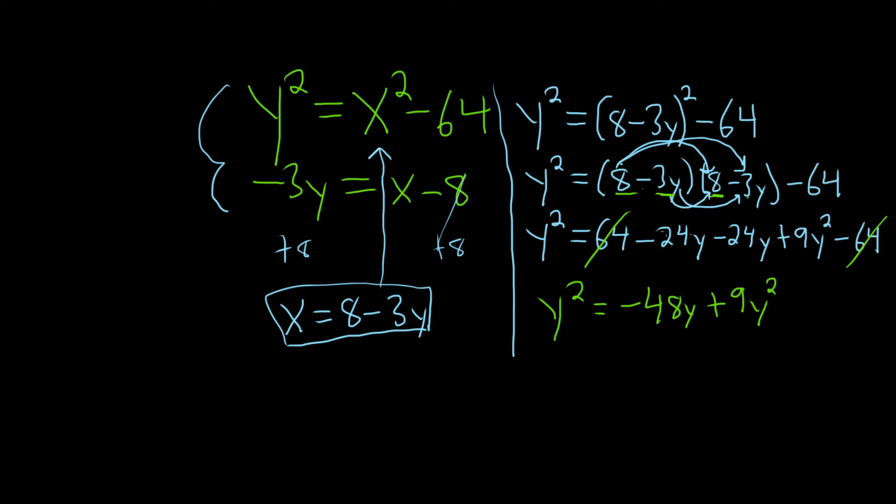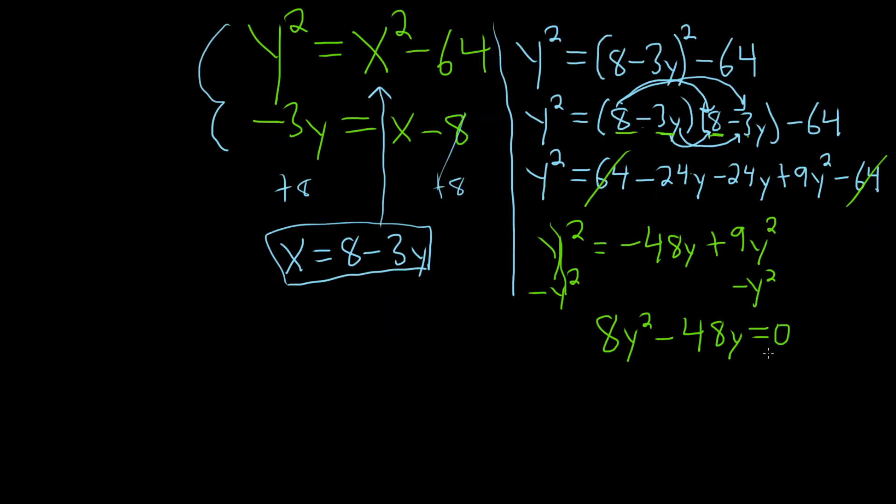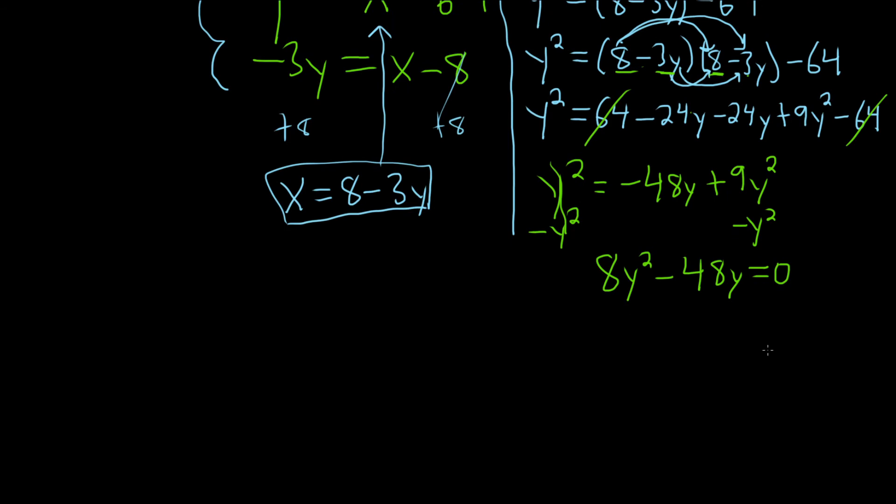I guess we can set it equal to 0, so we can subtract y squared. So minus y squared minus y squared. That leaves us with 8y squared minus 48y. And that's equal to 0. So it looks like we can pull something out here. I think we can pull out an 8y.